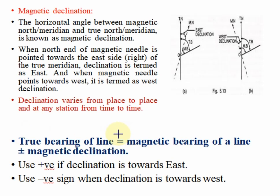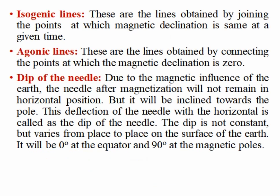Declination varies from place to place and at any station from time to time. The true bearing of a line equals the magnetic bearing plus or minus declination. Use the positive sign when the declination is towards the east, and the negative sign when the declination is towards the west.